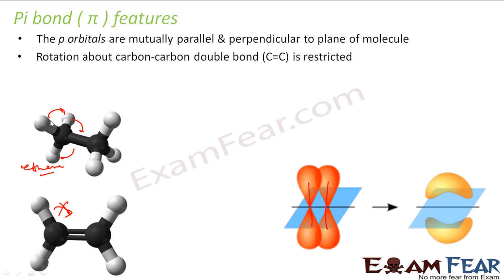If you see this carbon, there are three hydrogens here. These three hydrogens can actually rotate, and here also the hydrogens can rotate because it is a single bond. But the moment you have a double bond, this rotation is restricted. That's why the carbon-carbon double bond rotation is restricted.